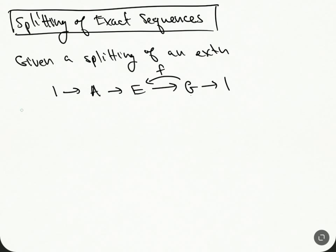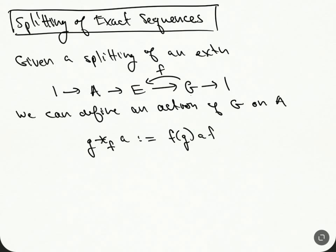We get to define an action. Can define an action of G on A. And how do we define this? This is going to be G times A. So, this is going to be defined to be equal to F(g)·a·F(g)⁻¹.